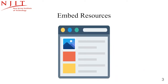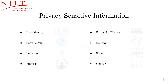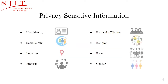The resources shared in sharing services can also be embedded in other websites — in this example, an image. Other websites access these resources through cross-site requests. Users usually put important privacy-sensitive pieces of information in these services, such as their identity, social circle, location, interest, political affiliation, religion, race, and gender. Users do not want this type of private information to be leaked outside the sharing service.